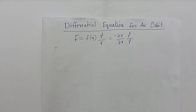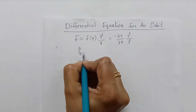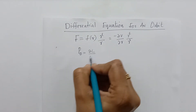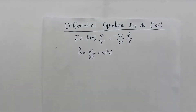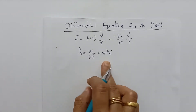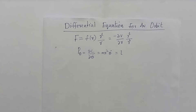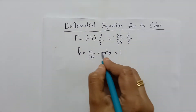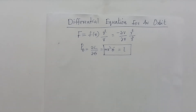We discussed kinetic energy and potential energy. Then we saw that the canonical momentum P_theta, that is ∂L/∂θ̇, is equal to MR²θ̇. And MR²θ̇ is equal to a constant L. This is one of the equations of the first integrals of motion.